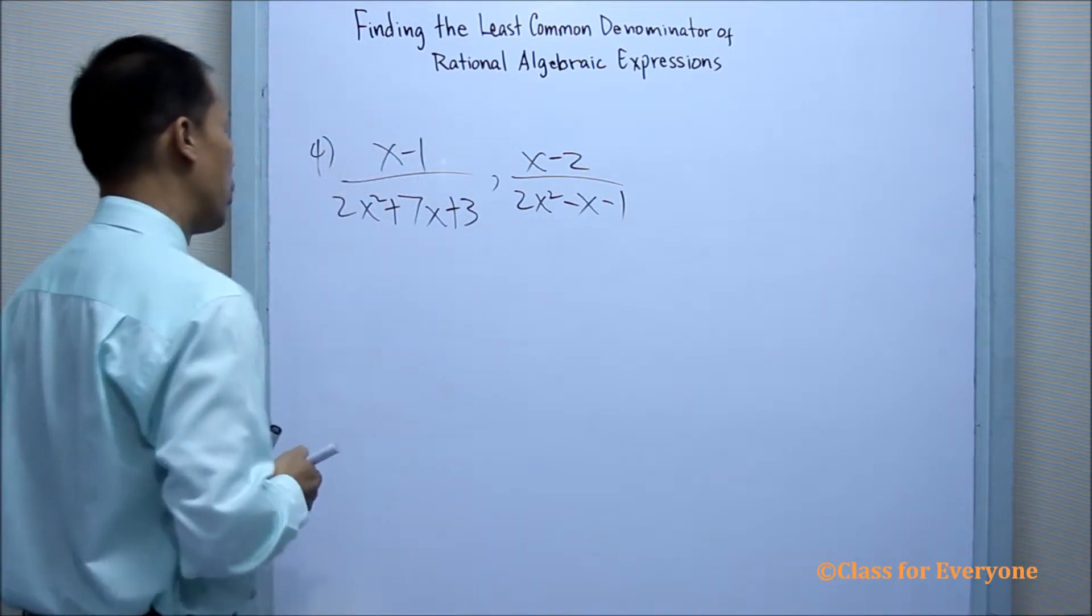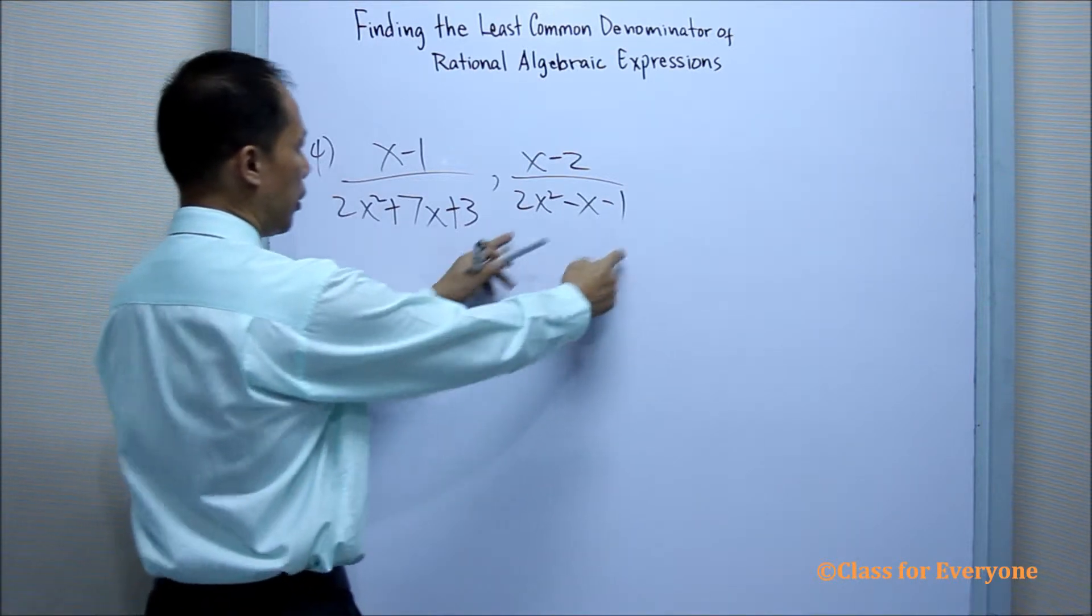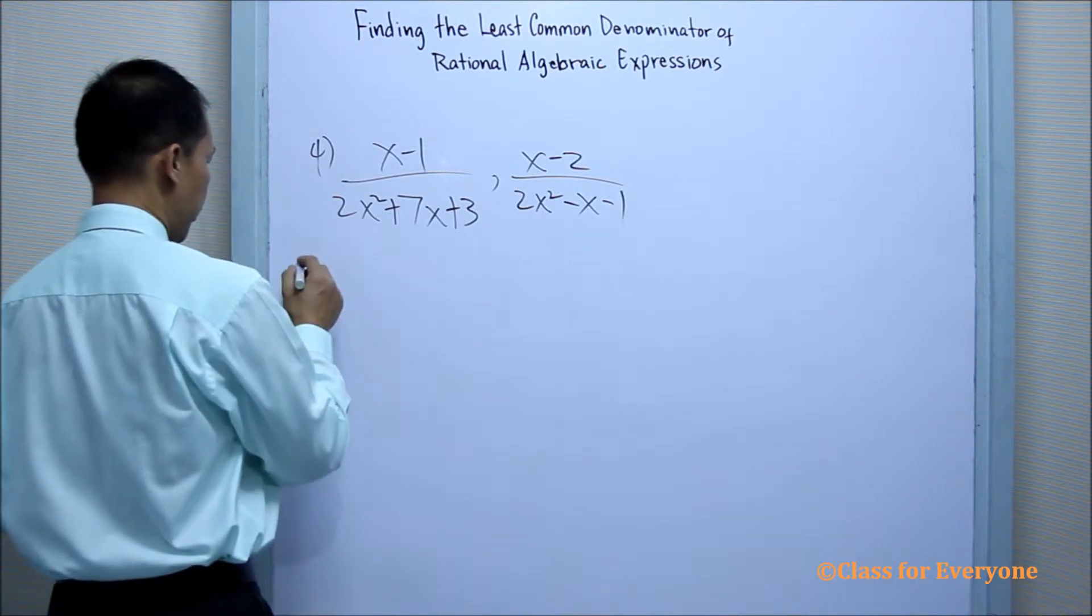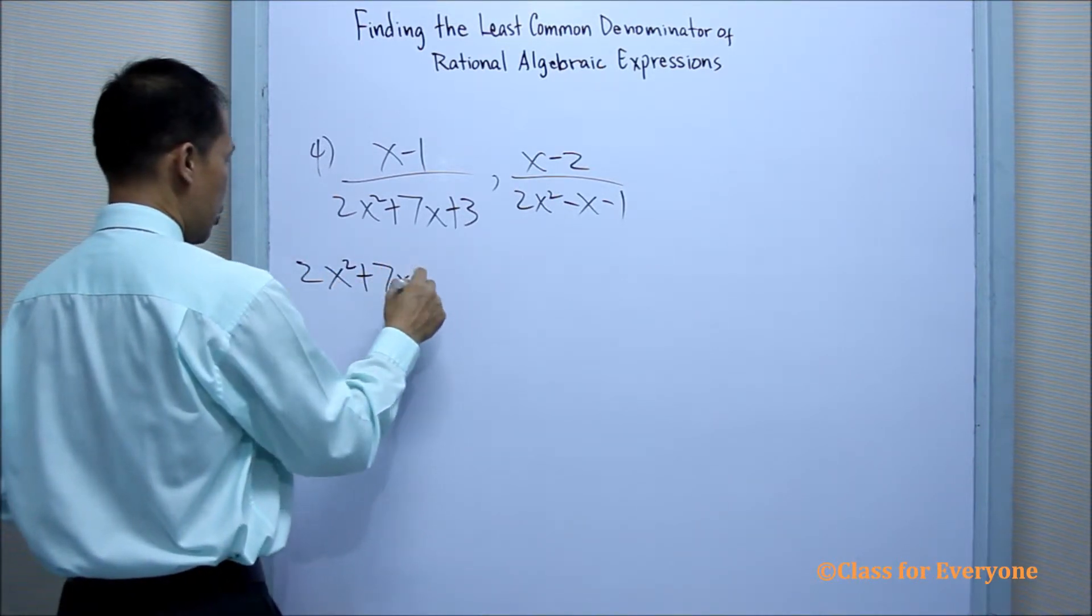So we are going to find the factors of this denominator and this denominator, and look if there is a common factor. So the factors of 2x squared plus 7x plus 3.